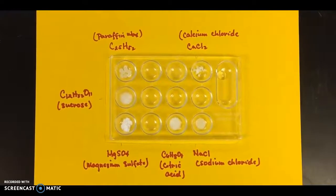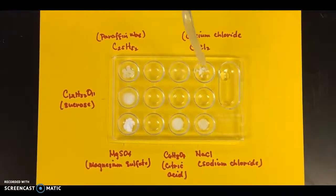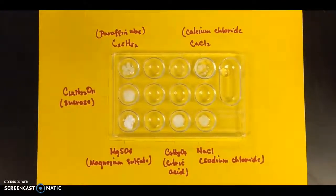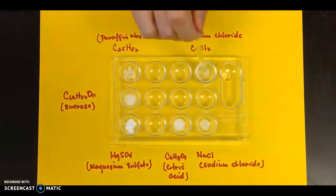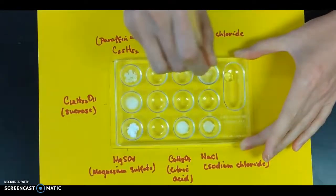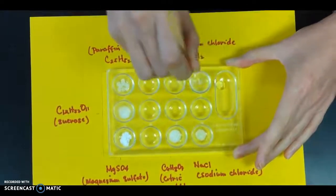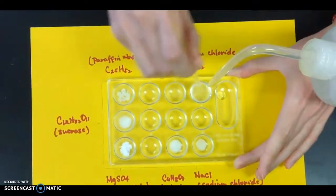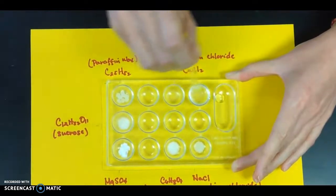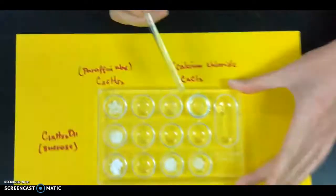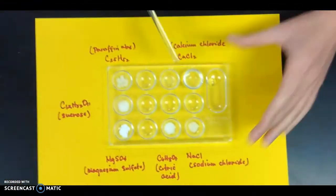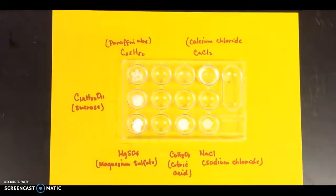For the solubility test, I will be putting a little bit of water in these wells to see if the compounds dissolve in water. We're going to start with calcium chloride, and I'm going to grab a stirring rod to stir it and see if it will dissolve. Go ahead and do your observations — record whether it's going to be soluble or insoluble for calcium chloride.